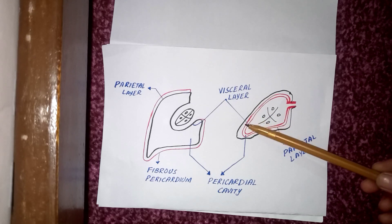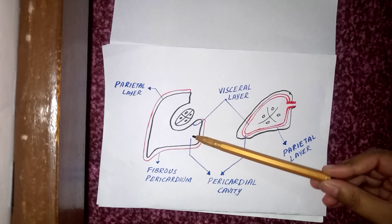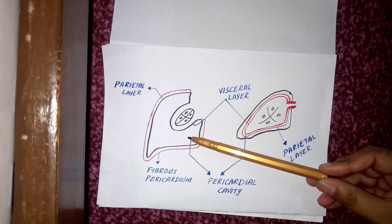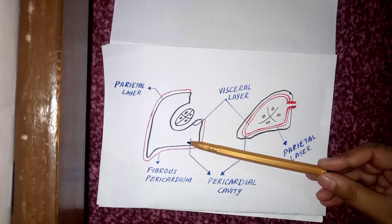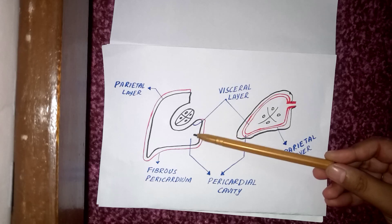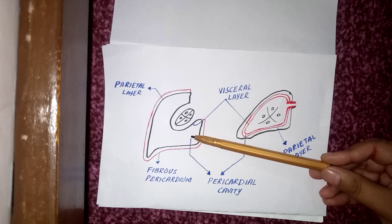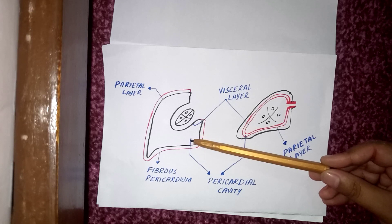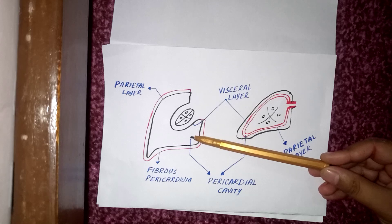Between the two layers there lies the pericardial cavity, which is a potential space between the parietal pericardium and the visceral pericardium. It contains a thin film of serous fluid, which lubricates the opposed surfaces and allows the heart to beat smoothly.